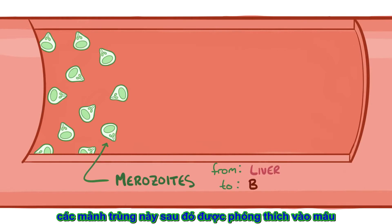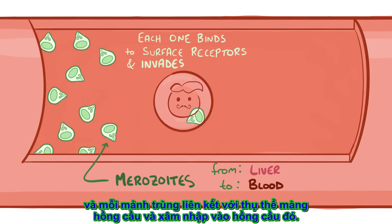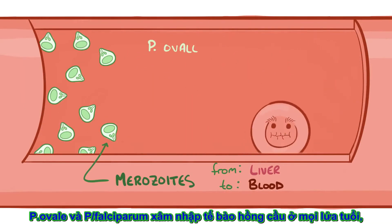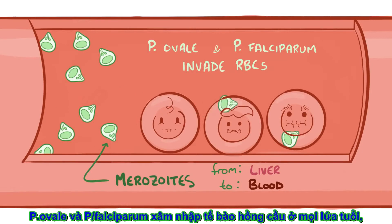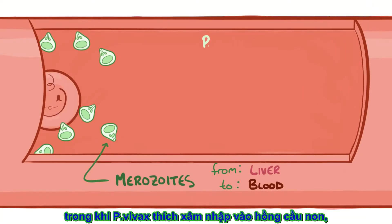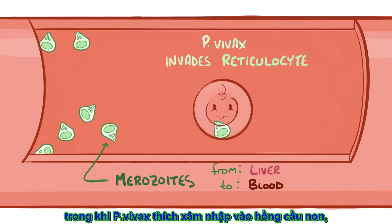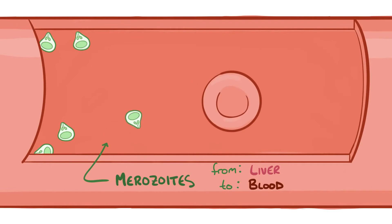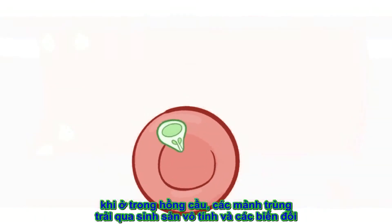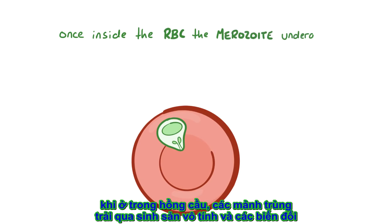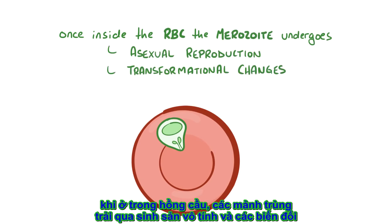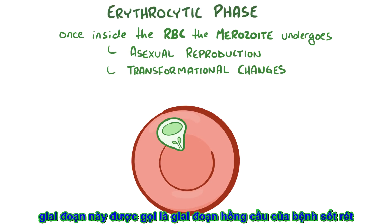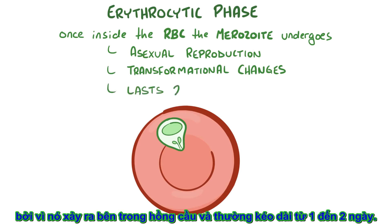The merozoites are then released into the blood, and each one binds to a surface receptor and invades a red blood cell. Plasmodium ovale and Plasmodium falciparum invade red blood cells of all ages, whereas Plasmodium vivax prefers to invade reticulocytes, which are young, immature red blood cells, and Plasmodium malariae and Plasmodium knowlesi prefer to invade older red blood cells. Once inside the red blood cell, the merozoite undergoes asexual reproduction and a series of transformational changes. This phase is known as the erythrocytic phase of malaria and generally lasts two to three days.